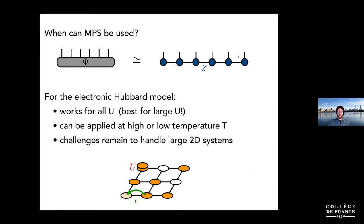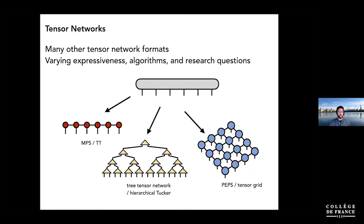In general, this is now a very rich field. In addition to matrix product states, there are many other tensor network formats, each with their own expressive power, associated algorithms, and theory. This field is bearing a lot of fruit — not only numerically but theoretically, with full classifications of certain classes of systems, understandings of concepts like topological order, and many other things continuing to come out of this field.